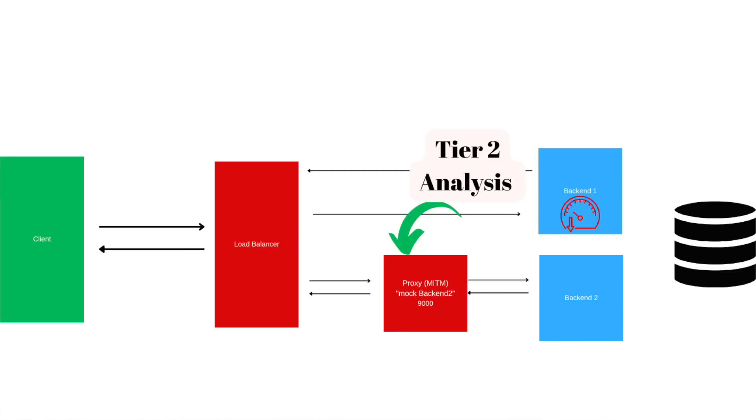Then we zoom in for more verbose details. The second level of analysis builds on tier one — instead of Postman or diff tools, we use a man-in-the-middle proxy: Fiddler, Charles — tools that act like a debugging proxy where we intercept traffic between the client and the backend, between the load balancer and the backend, between the API gateway and the backend, and even between the backend and the database.